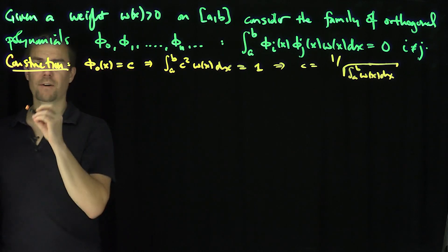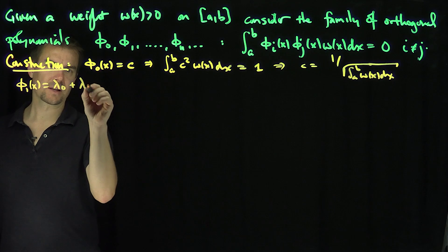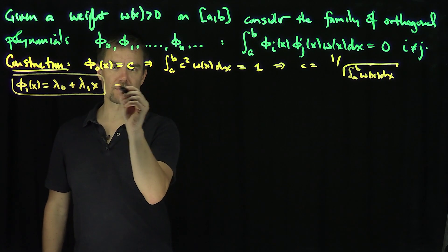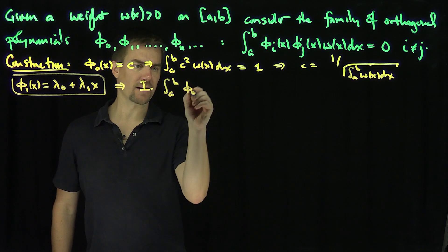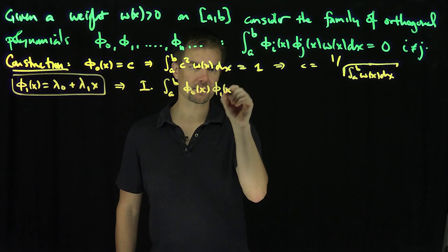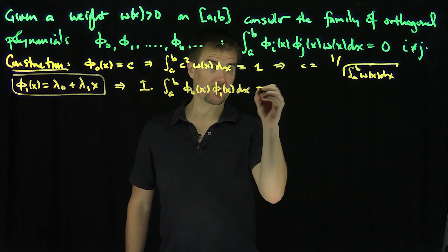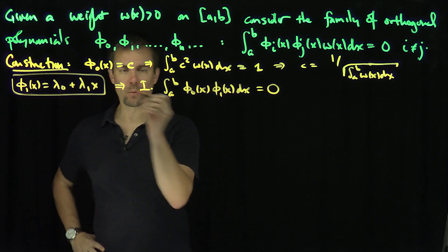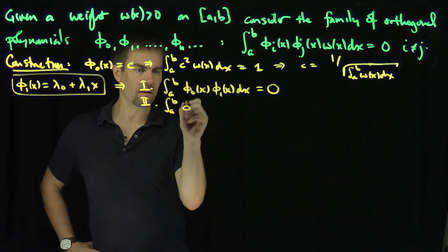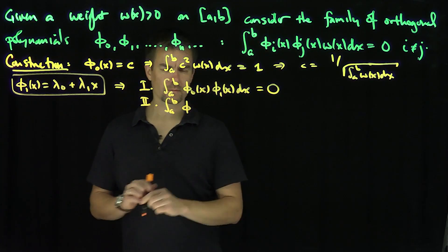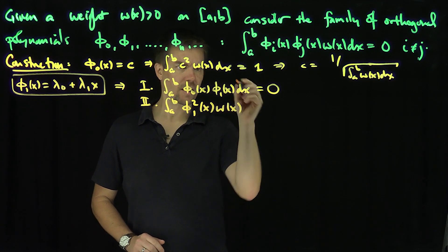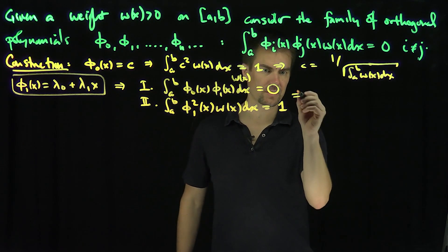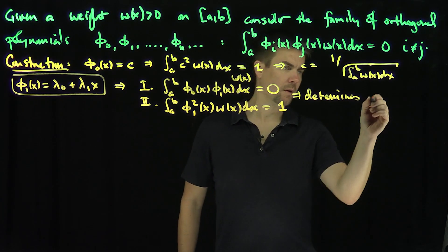And then φ₁ is linear. So how would you construct φ₁? You say φ₁(x) = λ₀ + λ₁x, so you have to find λ₁ and λ₀. You need two conditions. Condition number 1 is that the integral from a to b of φ₀(x) times φ₁(x) w(x) dx equals 0. The second condition is the integral from a to b of φ₁²(x) w(x) dx equals 1 to normalize it. So we have two equations and two unknowns that determine λ₀ and λ₁.